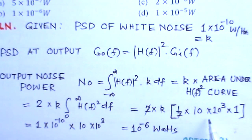So it will give me half base times height: half times 10 kHz times 1. If you simplify it, it equals 1×10^-6 watts.